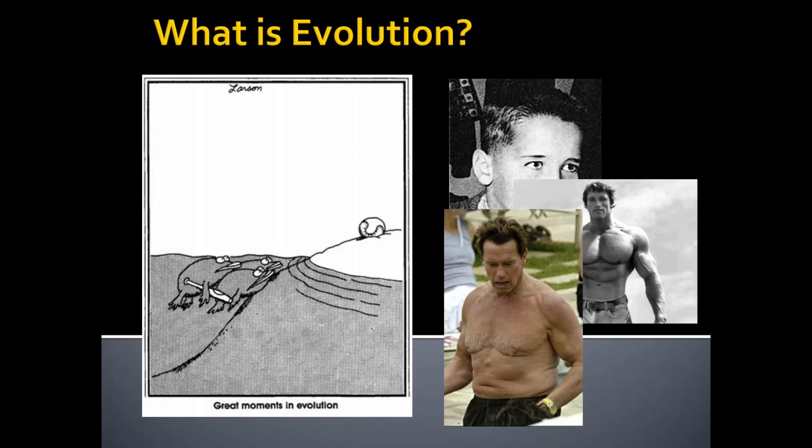That second key component is the level of organization that we're talking about. That level, for evolution, is a population. So our very simple definition of evolution is change in a population — or change over time in a population, if you prefer. Simplistically, we can just say: change in a population.